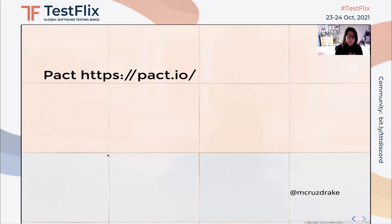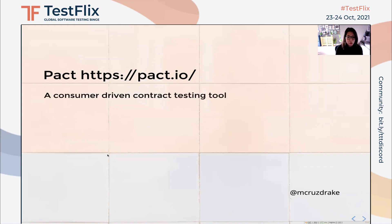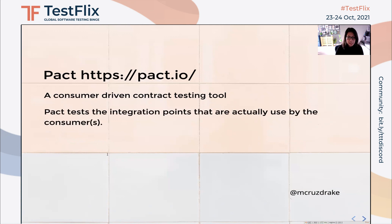Now, one tool we can use for contract testing is Pact. Pact is predominantly consumer-driven, meaning that the consumer defines the contract. With consumer-driven contract testing, the provider is free to change their behavior without affecting the consumer test if the consumer doesn't use it. This also means that we can have more confidence in making changes on both the provider and on the consumer side.